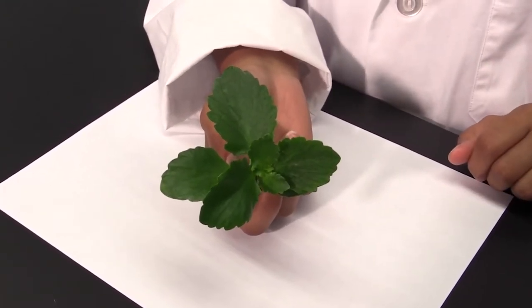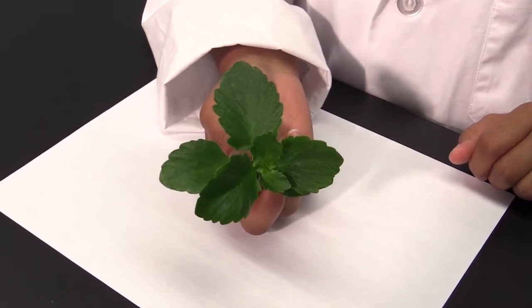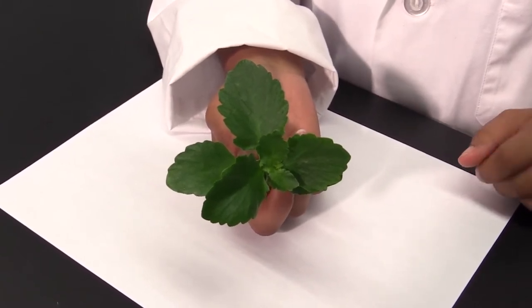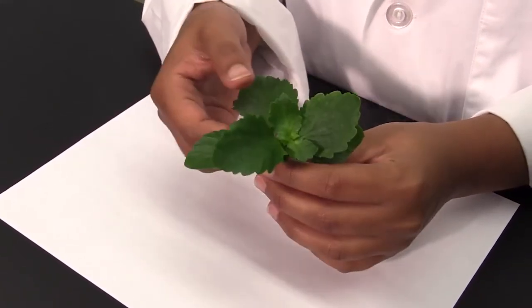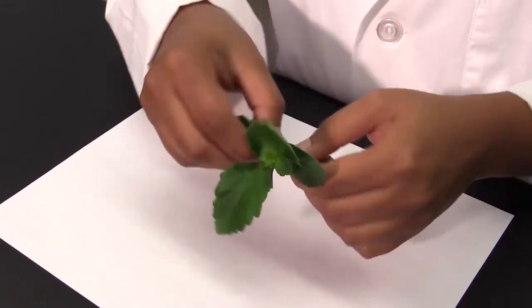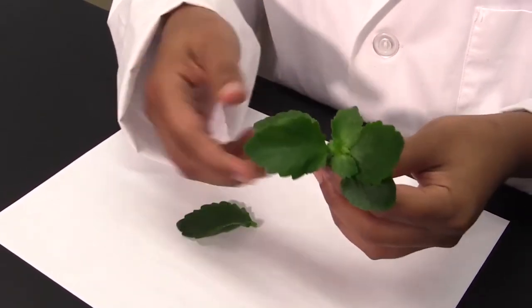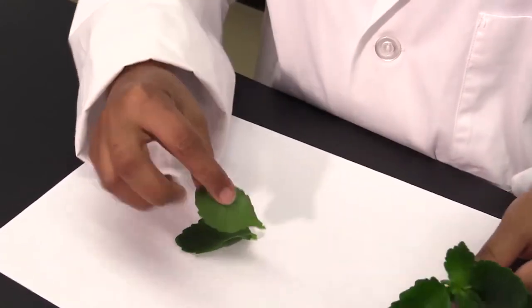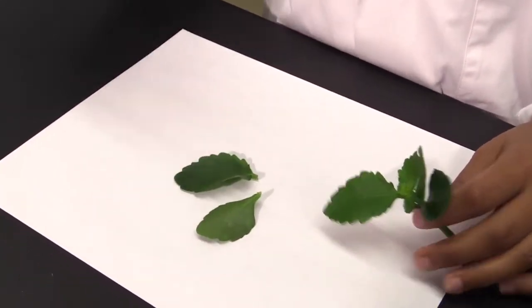If you have enough plant material for Part C, you can use two leaves. Begin by applying three patches of clear nail polish to both the ab-axial and ad-axial leaf surface.